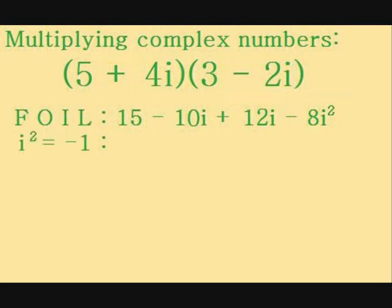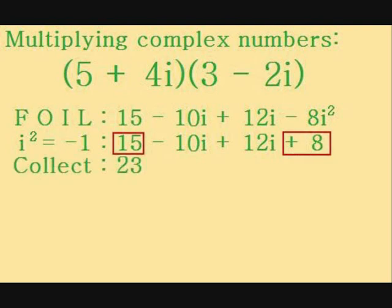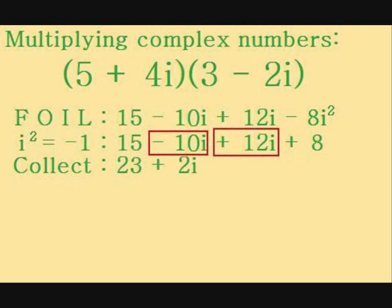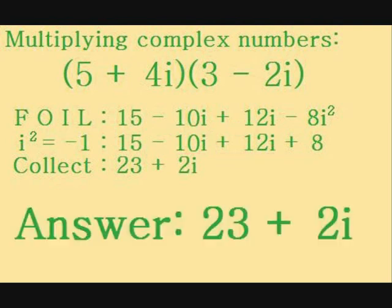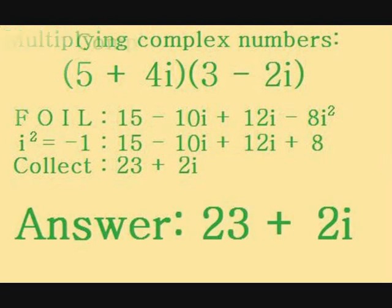Now, remember that i squared equals minus 1 from our earlier definition of what i is. So, minus 8i squared equals minus 8 times minus 1 equals 8. Now, we just collect the real and imaginary parts together. The real part is 15 plus 8, which is 23, and the imaginary part is minus 10i plus 12i, which is 2i. So, the answer is 23 plus 2i.